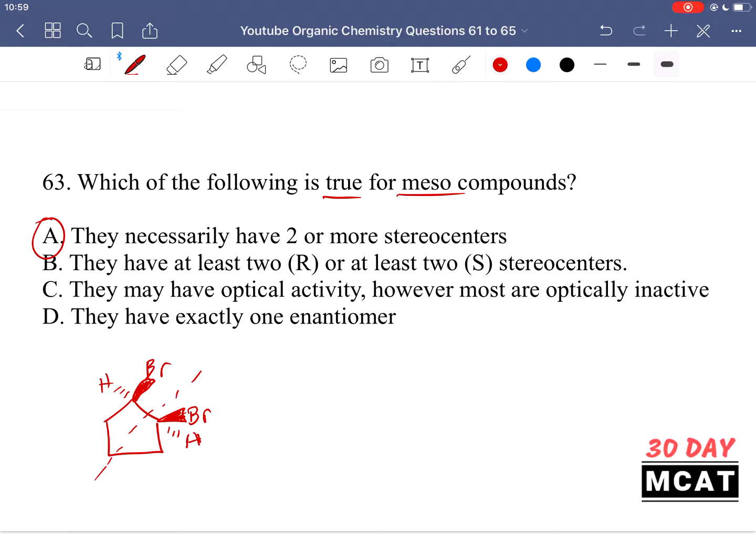Option B says they have at least two R or at least two S stereo centers. No, this is incorrect. There's no rule stating they have to be two R or two S. You can have an R and an S. What really matters is that overall there's an internal plane of symmetry. Option C says they may have optical activity, however most are optically inactive. That's incorrect. It's not that they may have optical activity. No, all of them are optically inactive. This is the definition of a meso compound.